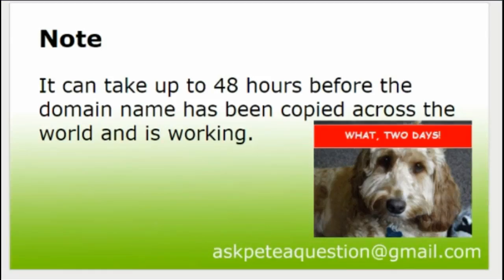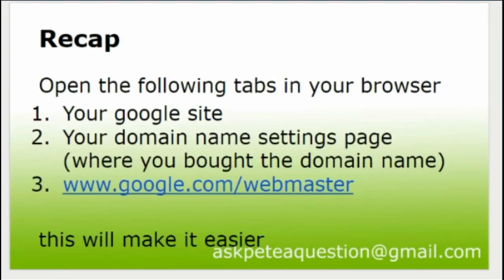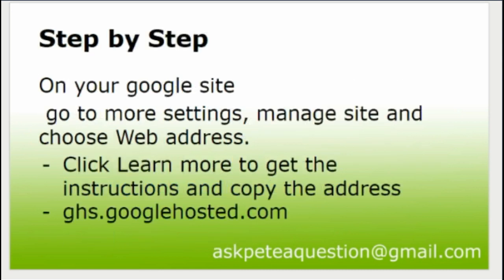What we did was open the following tabs in the browser: we opened the Google Site, I opened the domain name settings page — mine was with 123-reg where I bought the domain name from — and then I opened another page at www.google.com/webmaster. Doing that means I can skip from tab to tab, which makes life a little bit easier.